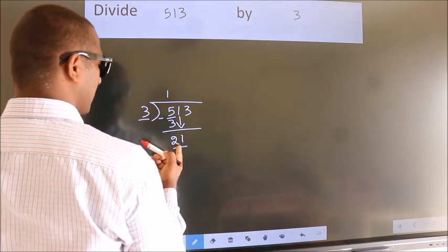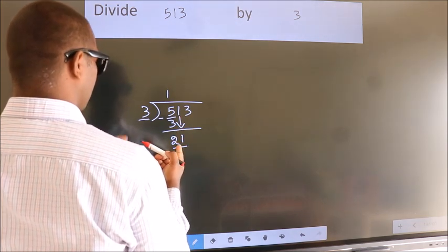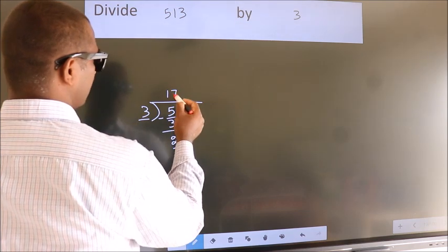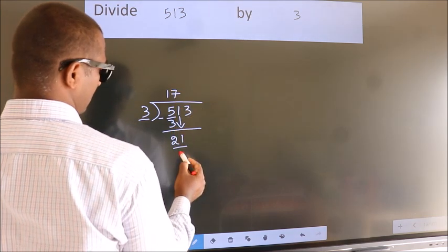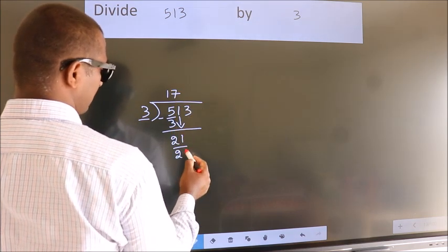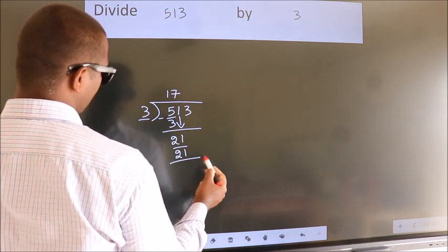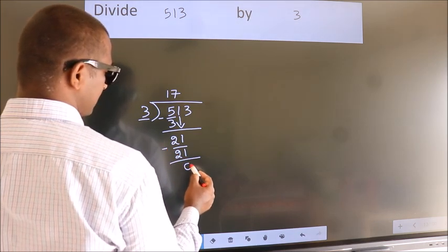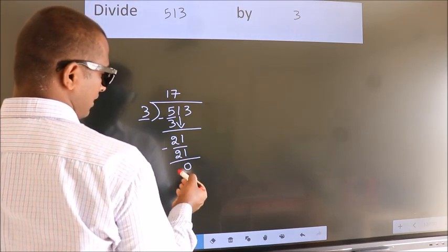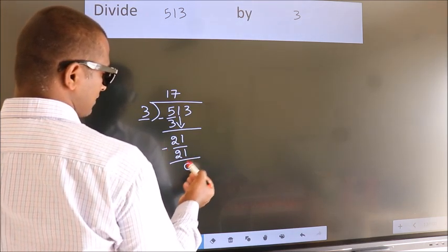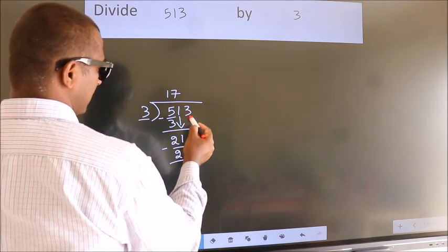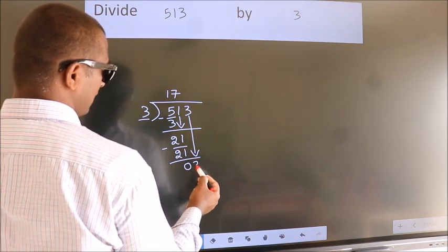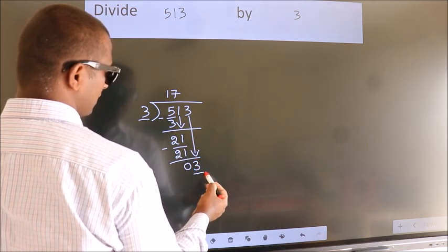When do we get 21 in the 3 times table? 3 sevens are 21. Now we subtract. We get 0. After this, bring down the beside number. So 3 down, so 3.